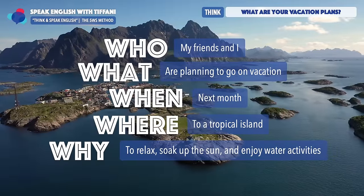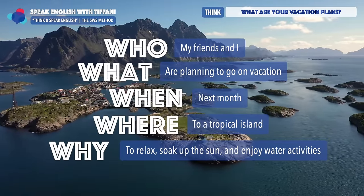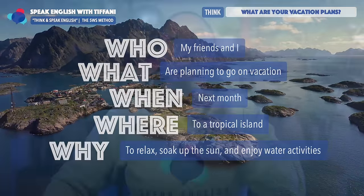One thing you'll notice is that it's very simple to think of answers to the five W's. Who? My friends and I. What? We're going on vacation. When? Next month. You see how easy it is to organize your thoughts to get the information. Now we need to turn this information into a response that native English speakers would give. We've organized our thoughts based on the five W's: who, what, when, where, and why.